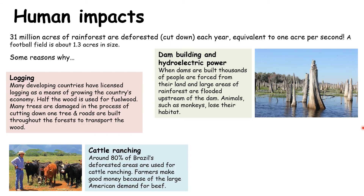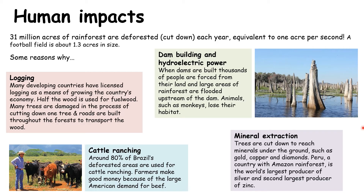Thirdly, cattle ranching — about 80% of Brazil's deforested areas are used for cattle ranching, and farmers are making good money due to the large American demand for beef. And finally, mineral extraction: if you find gold, copper, diamonds, etc. underneath the rainforest, you have to cut down the trees to get to it. Roads will also be built crisscrossing the rainforest in order to reach those minerals.